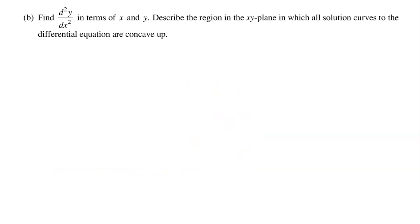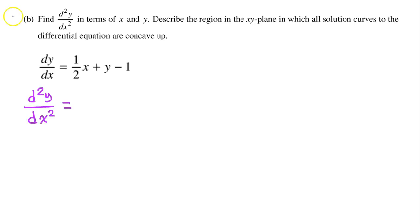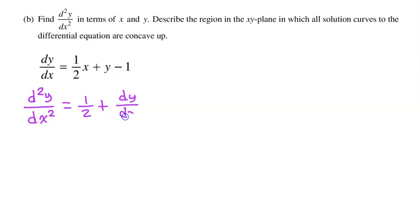Part B: Find the second derivative in terms of x and y, and describe the region in the xy-plane in which all solution curves to the differential equation are concave up. The second derivative will be the derivative of the first derivative. Differentiating term by term with respect to x, the derivative of one-half x is just one-half, and the derivative of y with respect to x is dy/dx. The derivative of a constant is zero.